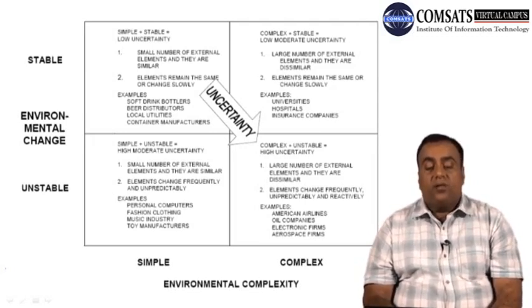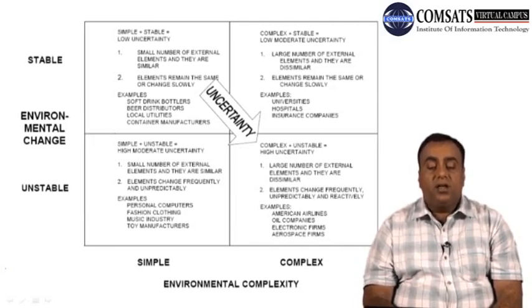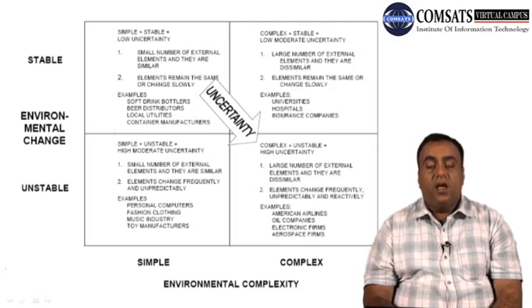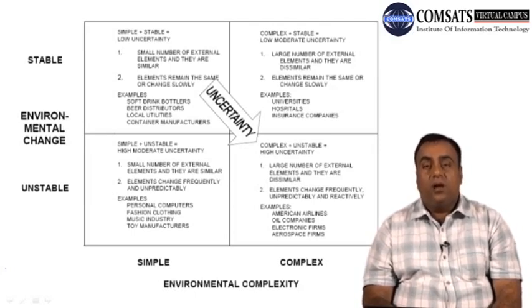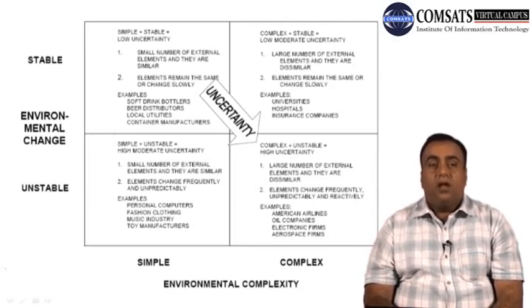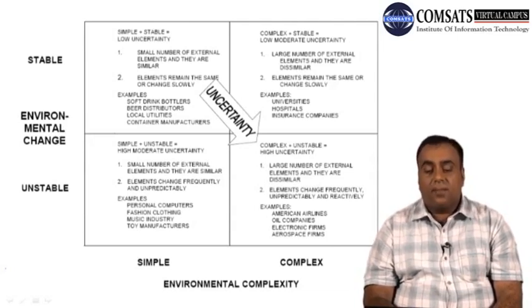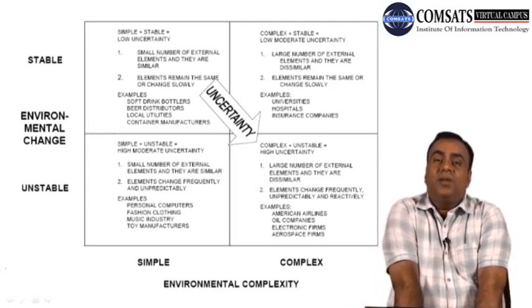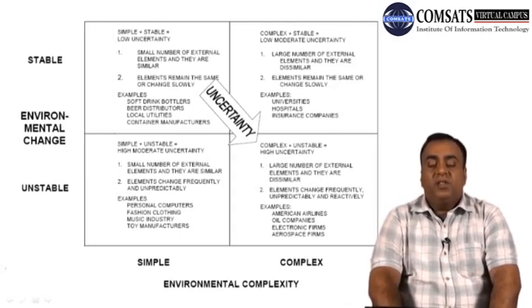In the second quadrant, the environment has low to moderate uncertainty: it may be complex with a large number of dissimilar external elements — such as technology, economic conditions, lending rates, and customer tastes — but the environment remains stable and elements change slowly. Examples of organizations operating in this quadrant include universities, hospitals, and insurance companies.